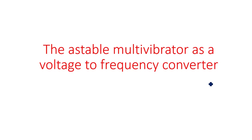Hi everyone. In this video I am going to explain the relation between voltage and frequency of the astable multivibrator — that means how the input voltage will change the frequency of oscillations. The input voltage we are giving is in addition to the supply voltage Vcc. Generally, the astable multivibrator is a free-running oscillator, so it does not need any external voltages.